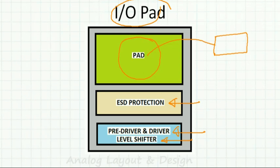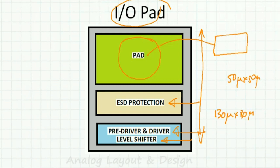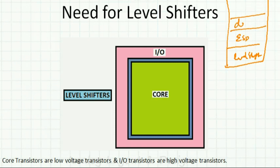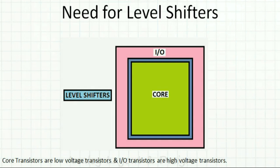All these elements together constitute an IO pad. In FinFET processes the entire IO pad can be as small as 50 micron by 50 micron, while in larger process nodes it is around 130 micron by 130 micron. The IO pad contains level shifters, ESD protection, drivers, and the pad itself. Now let's understand the need for a level shifter. We have the core circuit and the IO circuit.